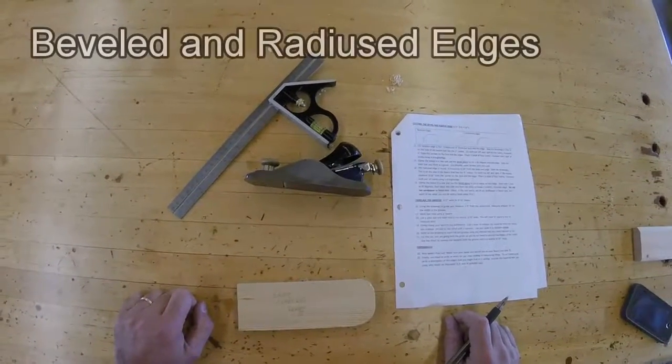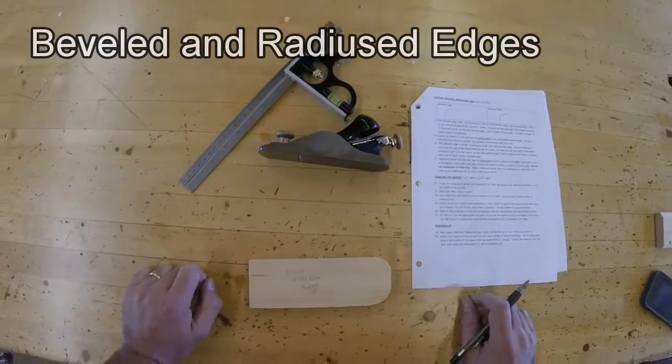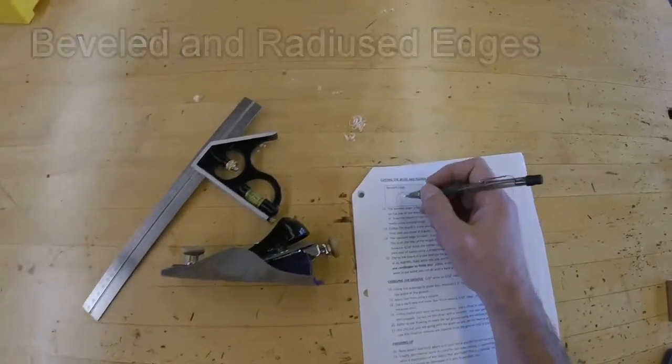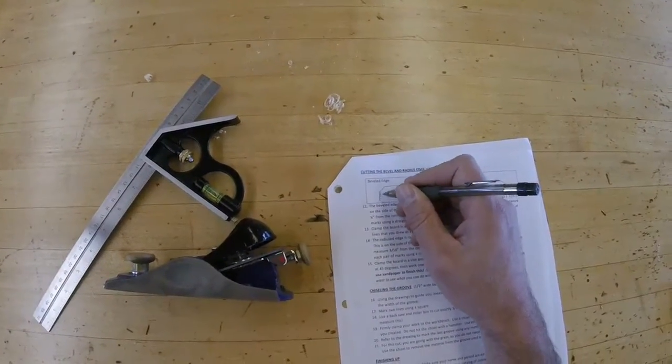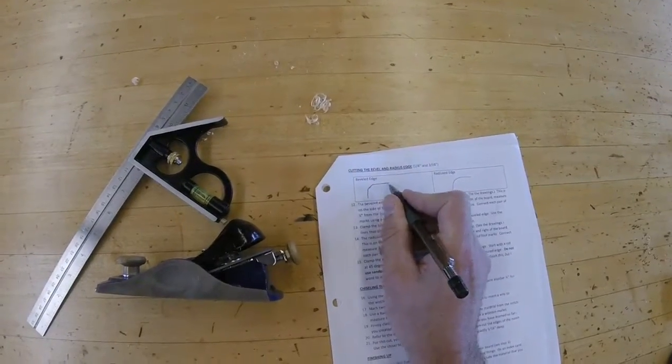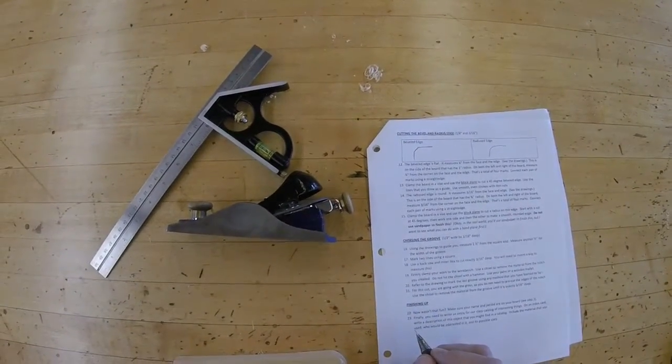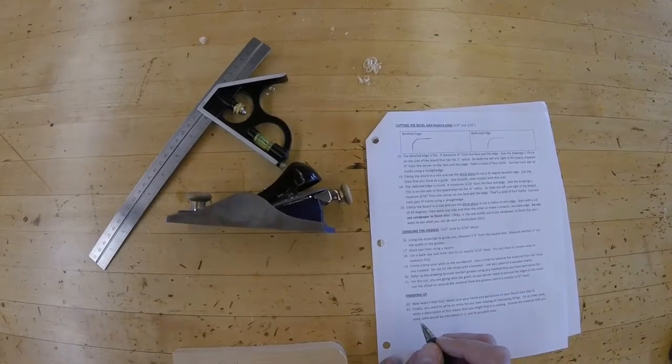Cutting the bevel and radius edge, 1 quarter inch and 3 sixteenths inch. The beveled edge is flat. It looks like this in your drawing. It measures 1 quarter inch from the face and the edge. We'll look at the drawings to do that.